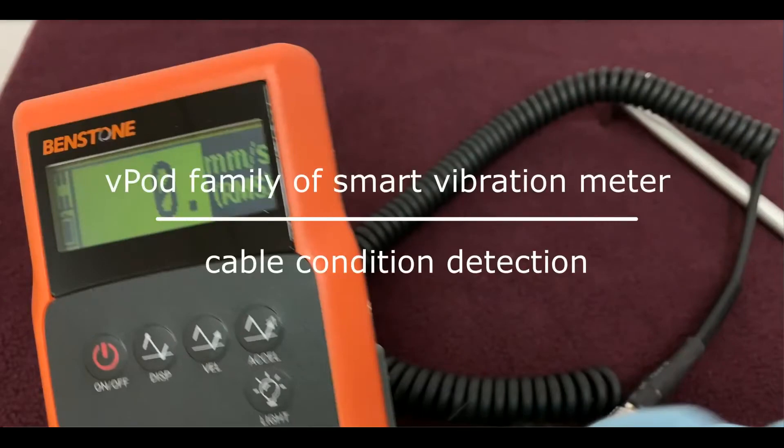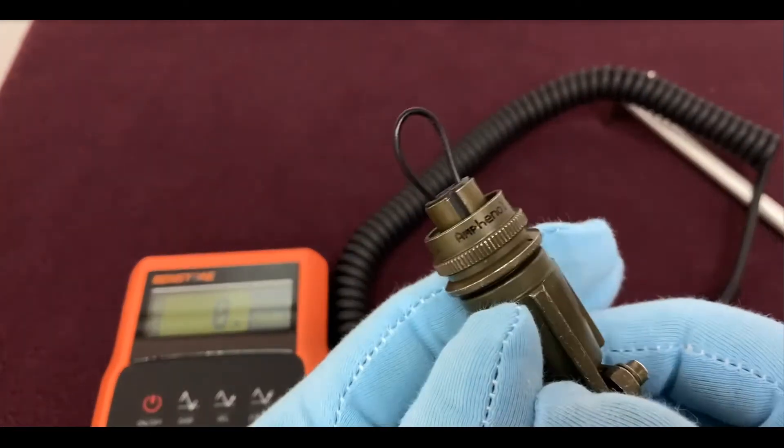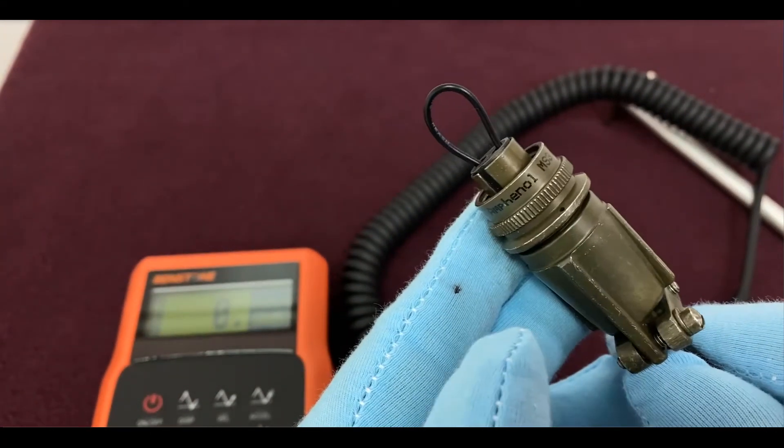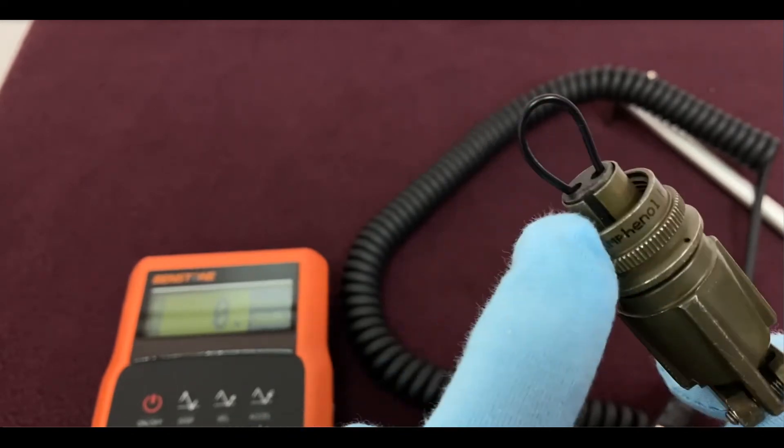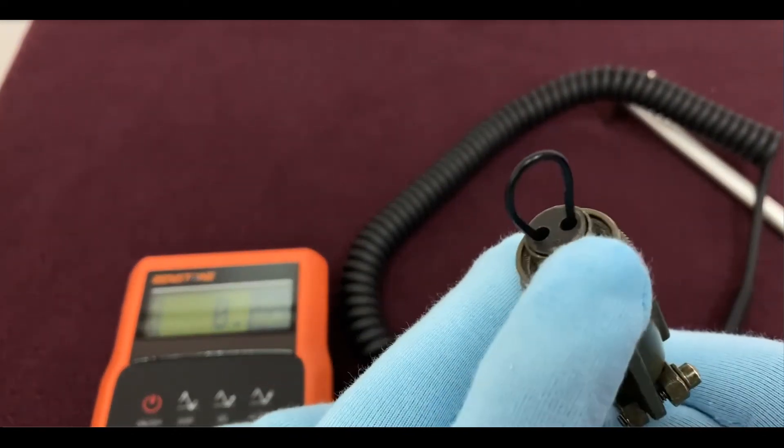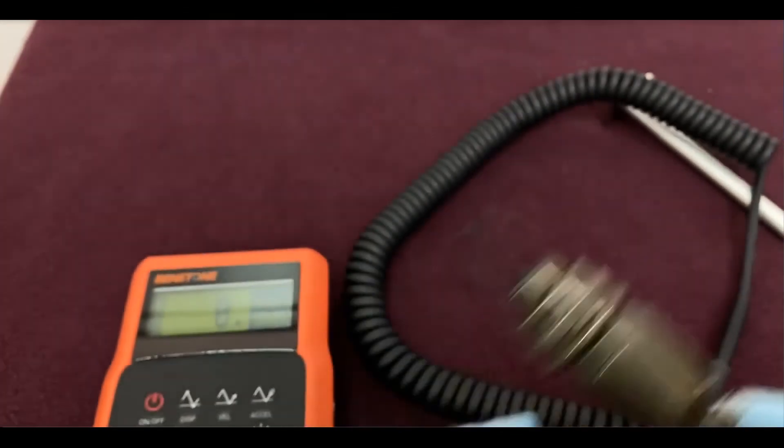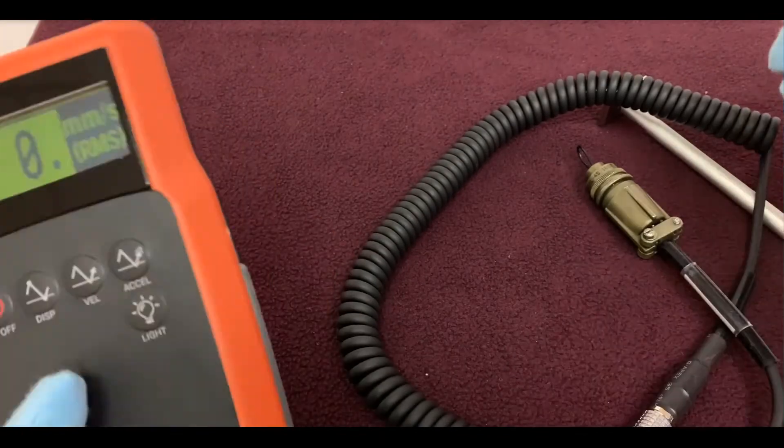The vPod series of meters has a feature that allows us to understand whether a cable is actually working properly or not. In this case, we've mounted a wire inside the cable itself so that it creates what is called a short. This is a common problem that happens with cables.